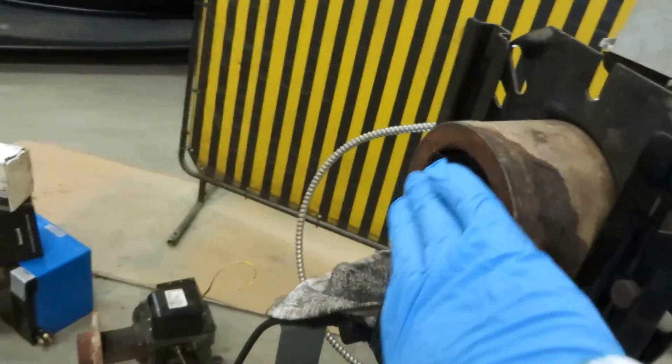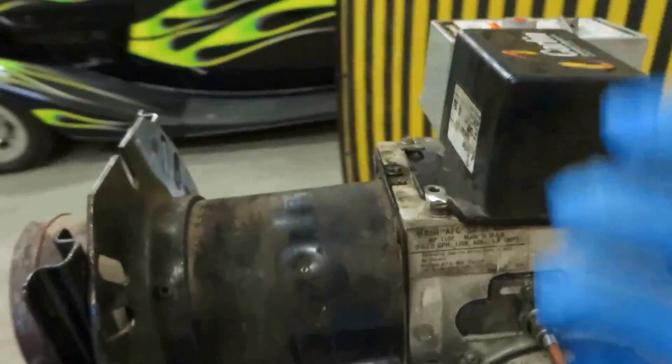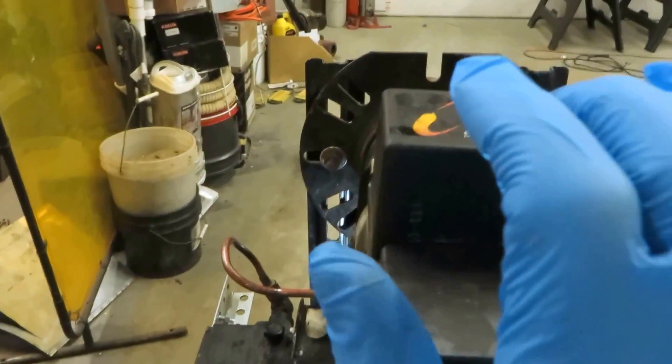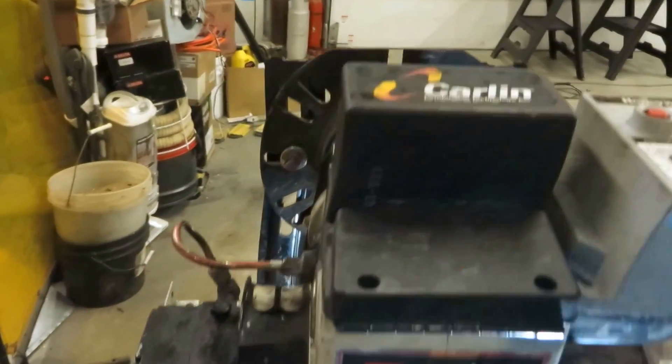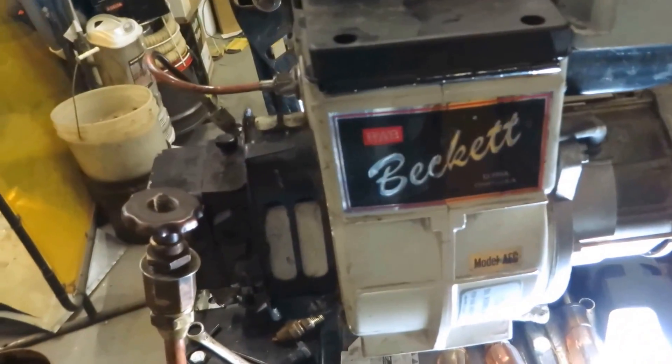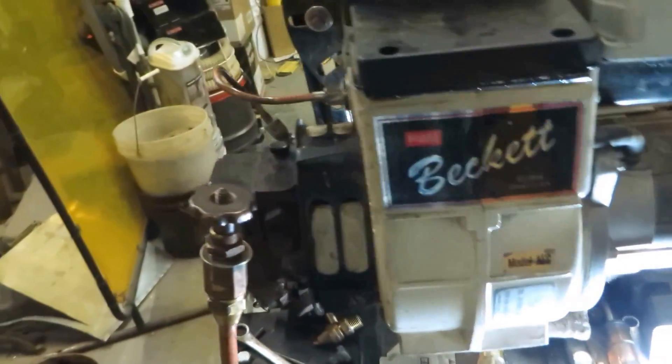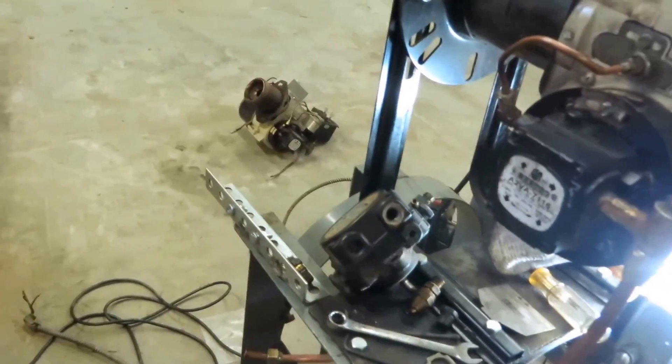So if this thing's sensing light, which it's sensing now, it's not going to want to start. I might have to tap this control. If you have this cover off and that CAD cell sensing light, it's not going to want to start. So if you see me tapping on things, that's why. So we'll fire this baby up, see what it looks like for the flame.